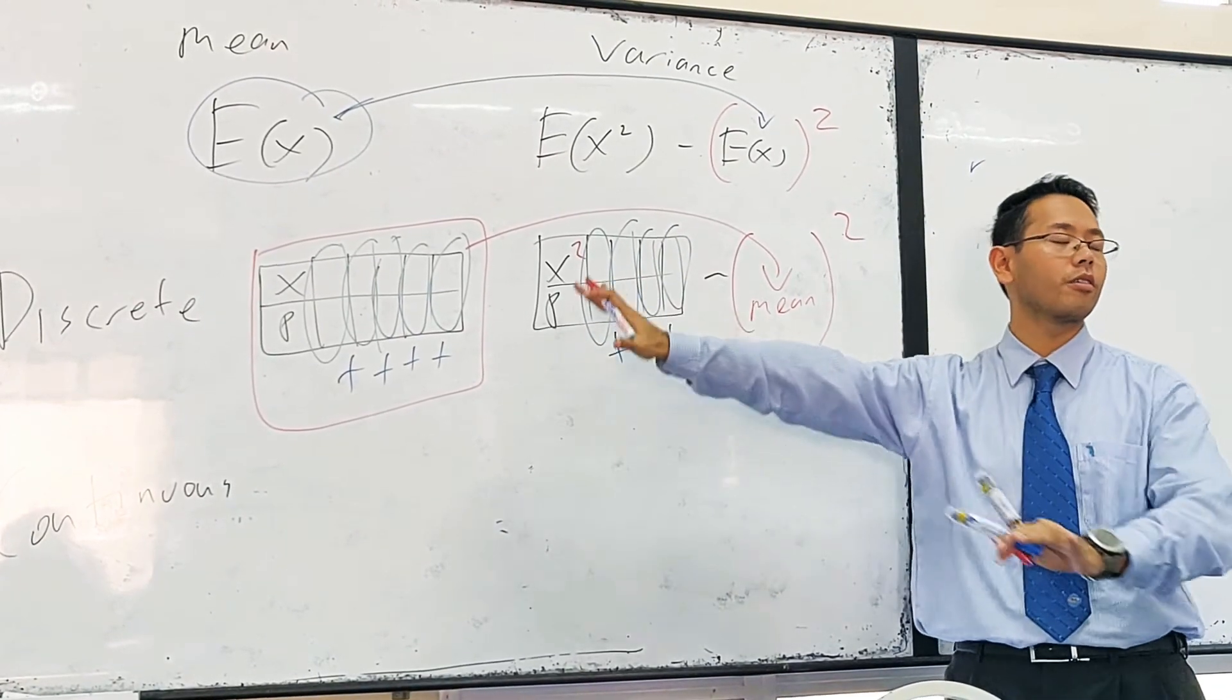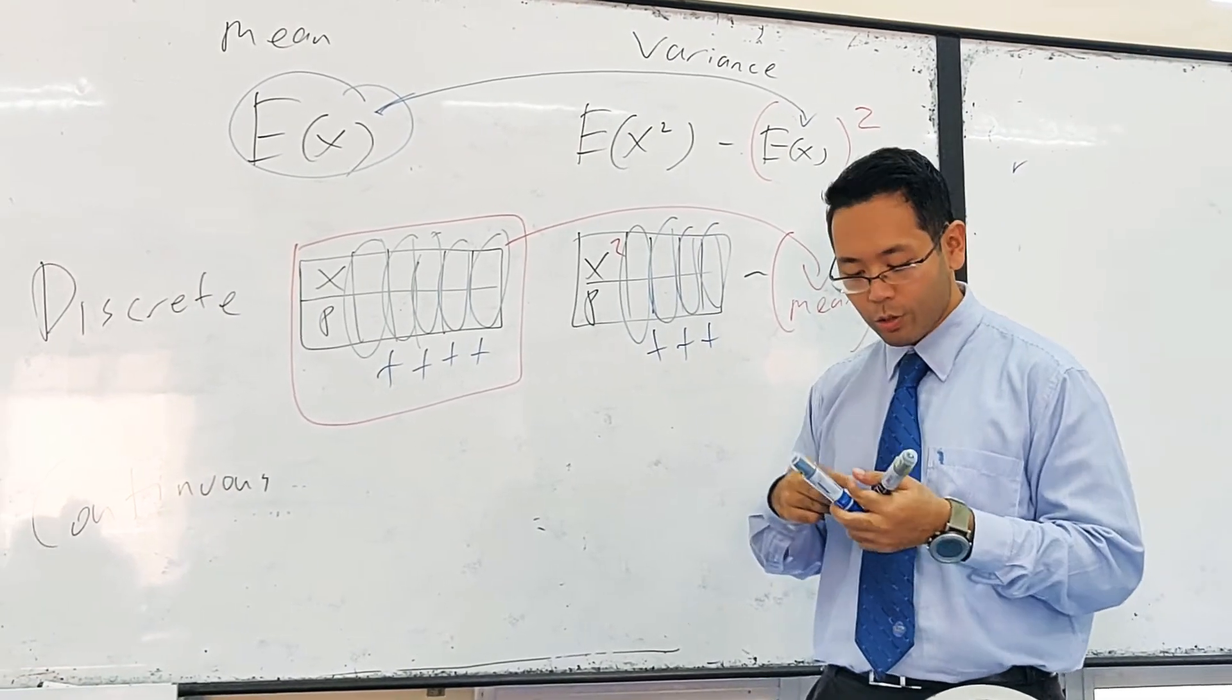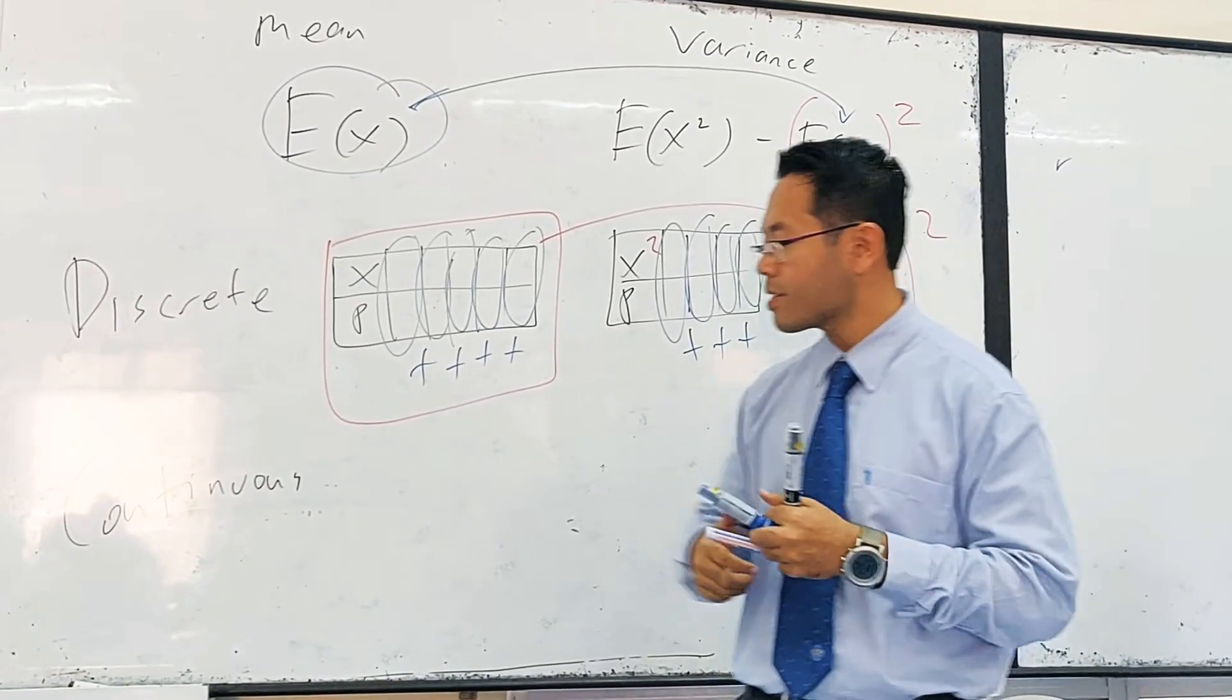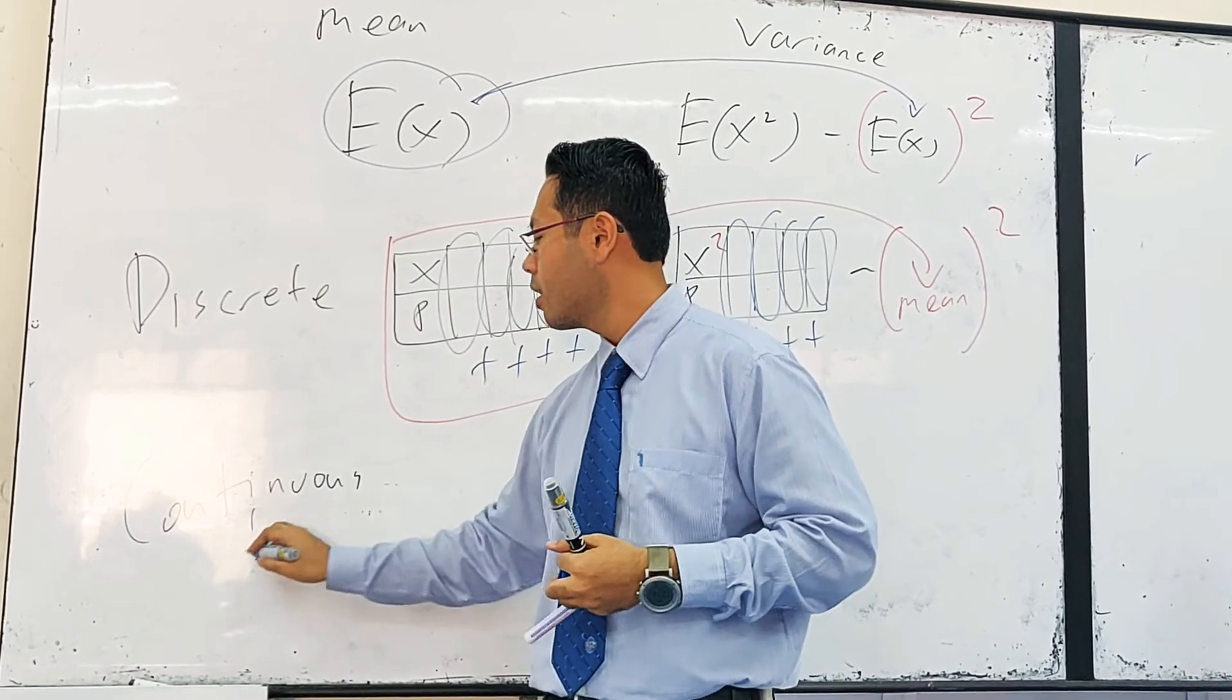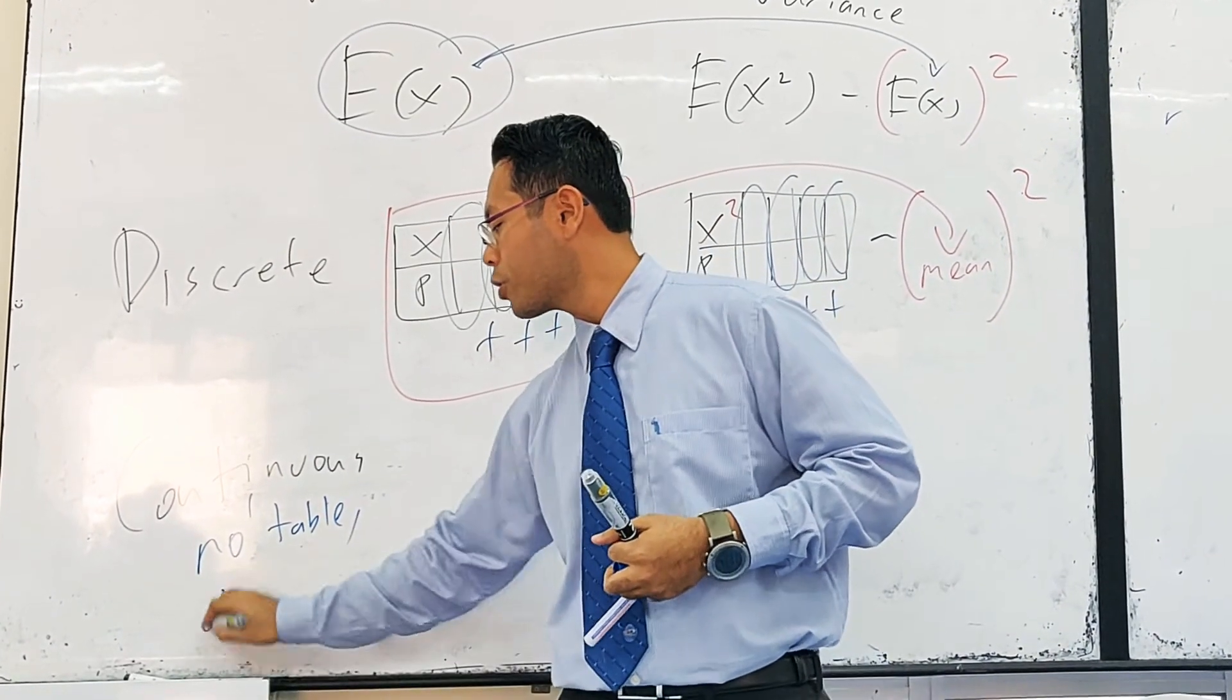So that's for discrete. Now, let's have a look for continuous. But I need you to understand a few things about continuous. Firstly, continuous last month has no table.